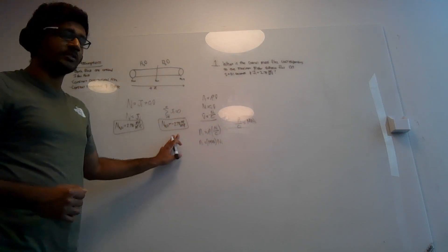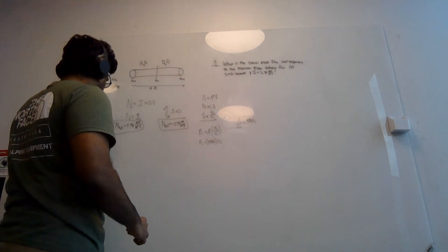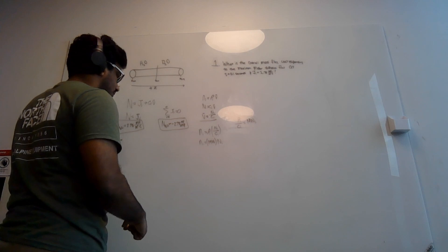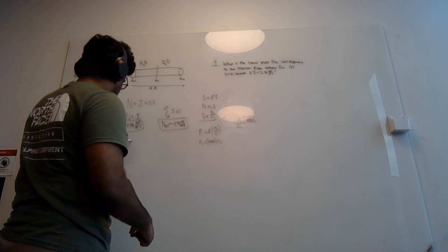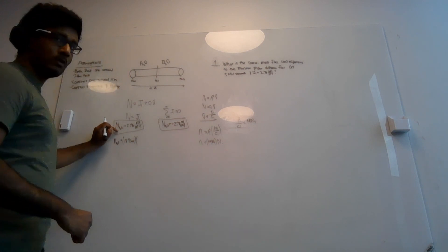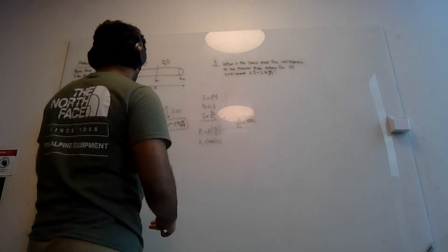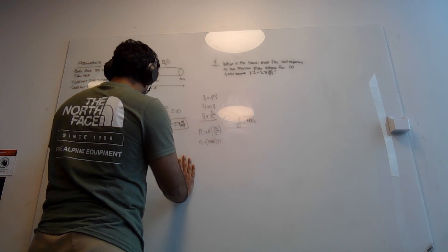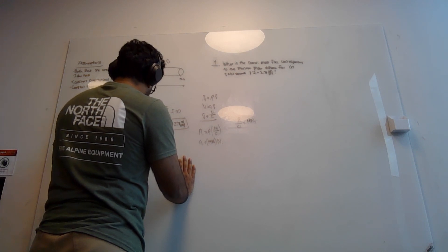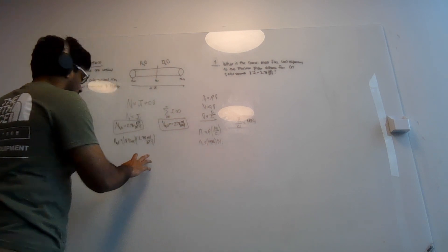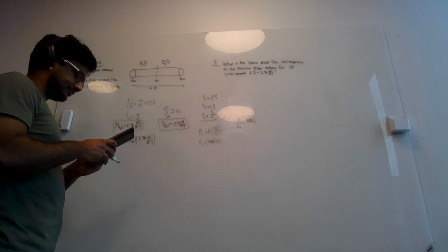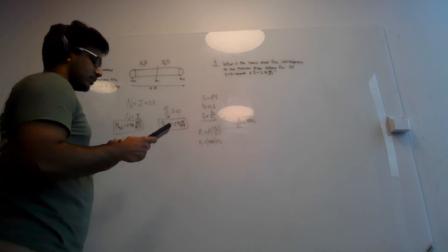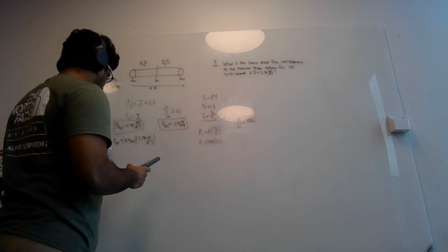We already have the molar flux for both D2O and H2O — 2.78 and negative 2.78 respectively — so we can solve the problem. The mass flux of H2O equals the molecular weight of 18 grams per mole times the molar diffusive flux of 2.78 moles per meters squared per second, which gives a mass flux of H2O equal to 50.04 grams per meters squared per second.